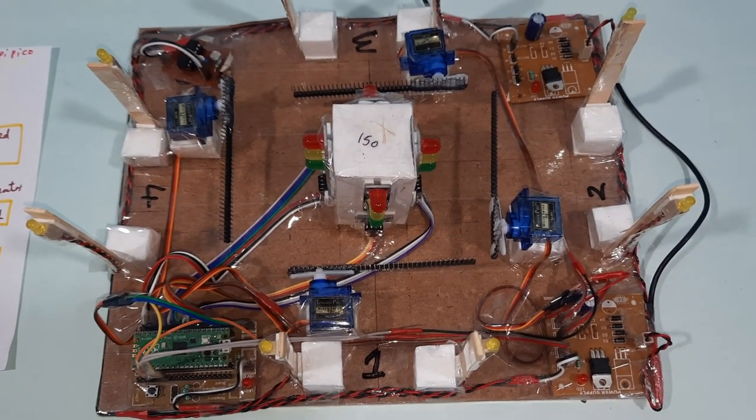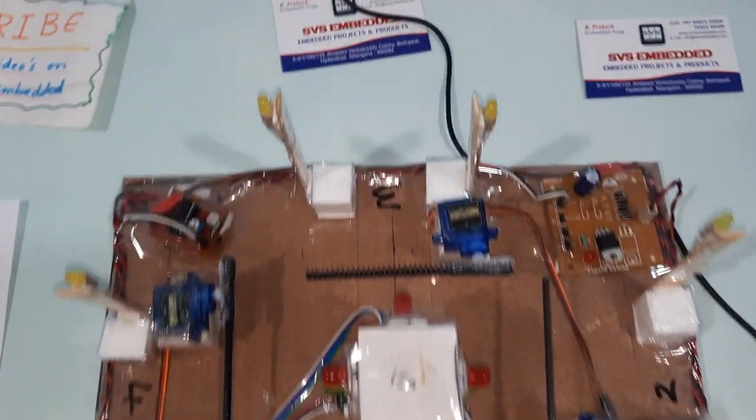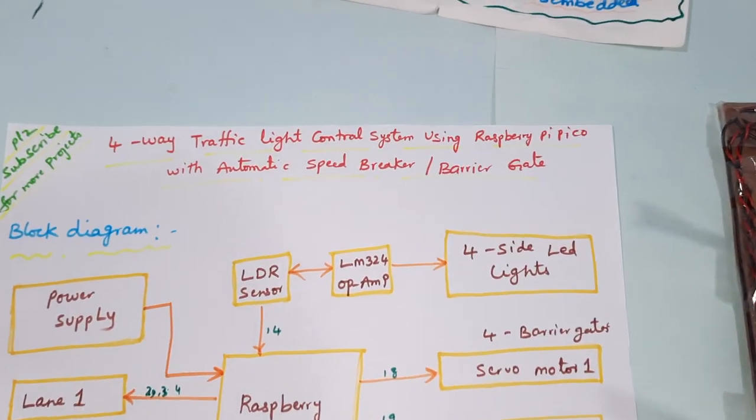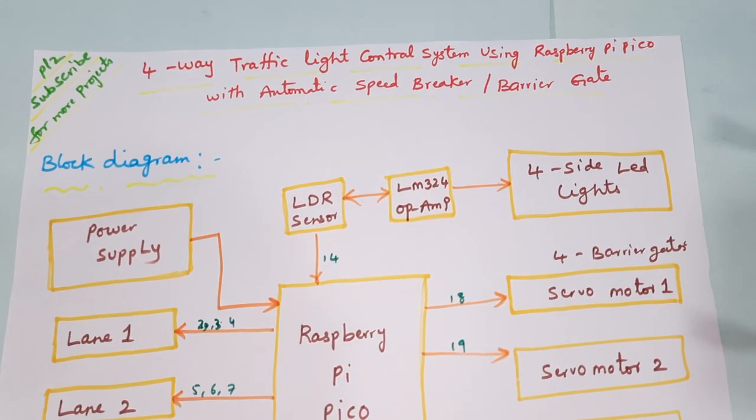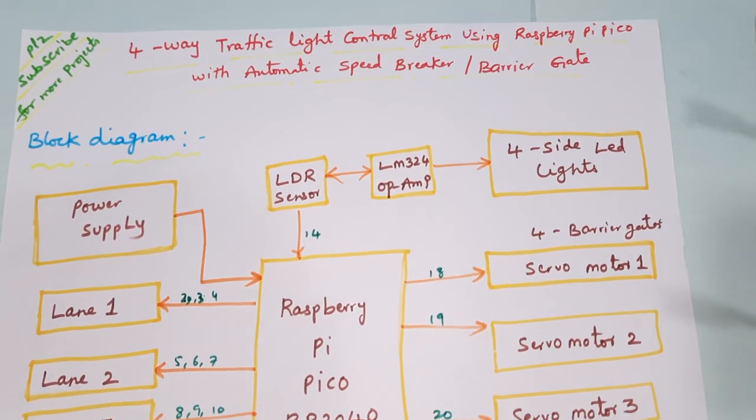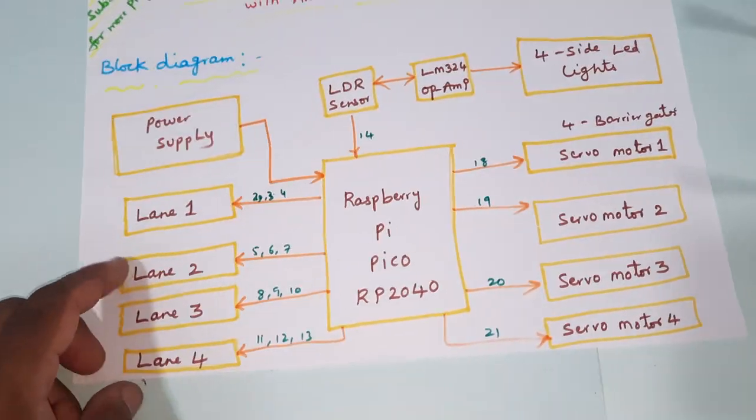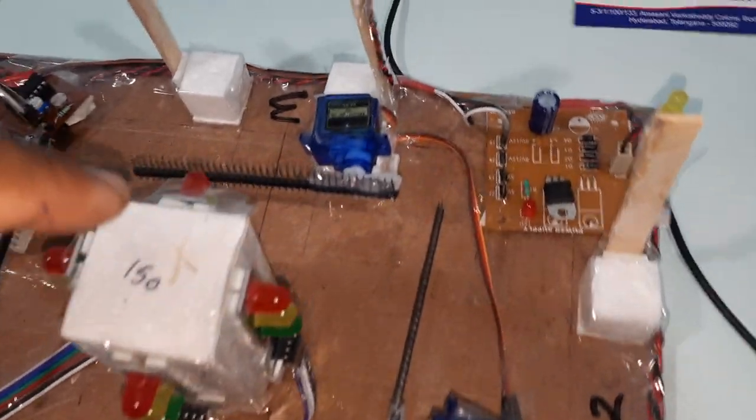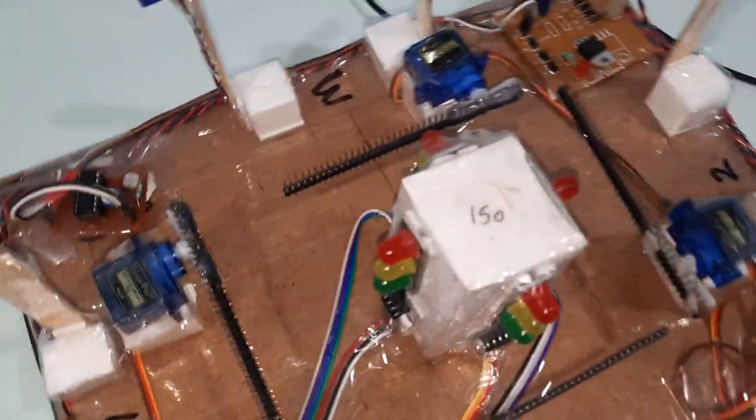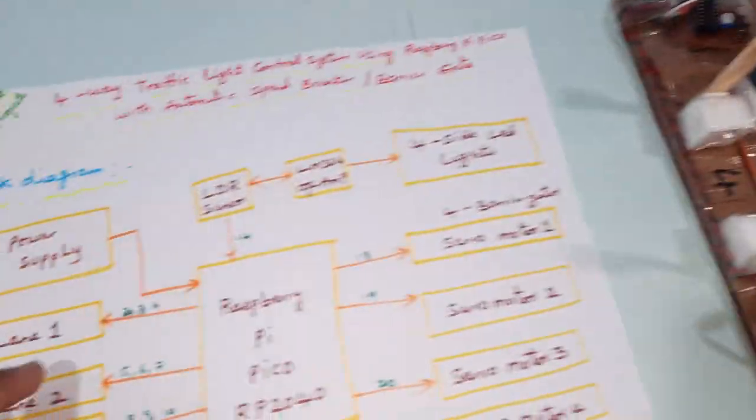Hi, we are from SV Assembly. The project title is four-way traffic light control system using Raspberry Pi Pico with automatic speed breaker and barrier gate control. Here we are using four side lanes with red, orange, green lights for each direction - four side traffic lights.